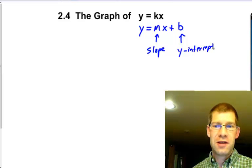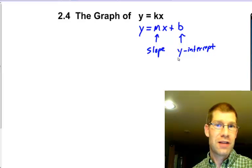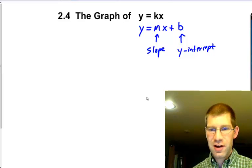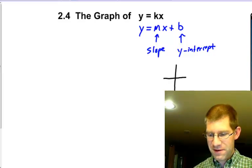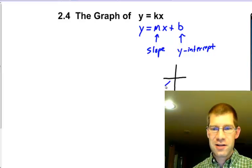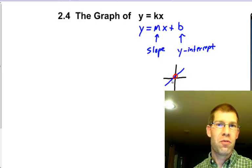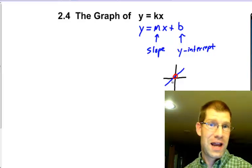Which really, what that means is that's going to be where our line goes through the y-axis. So if I were to take and put a graph on here and have a line something like this, the y-intercept is going to be this point right here, the point where the line crosses the y-axis.